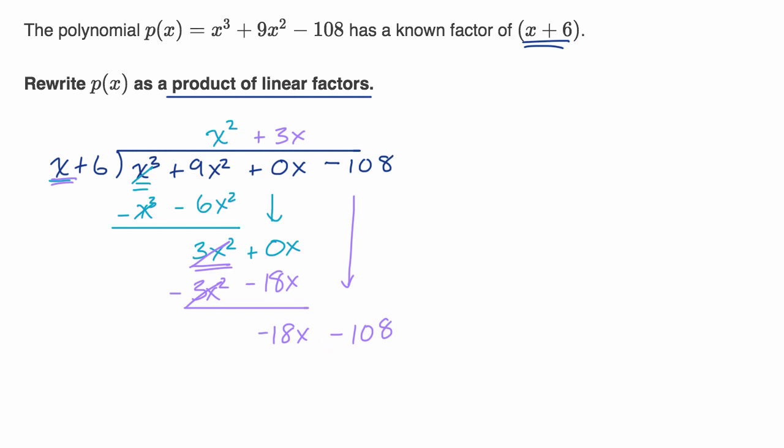And so then we have x goes into -18x, -18 times. -18 times 6 is -108. That was working out nicely. -18 times x is -18x. And then we want to subtract what we have in this not so pleasant brown color. And so I will multiply them both by negative. And so I am left with zero. Everything just cancels out.